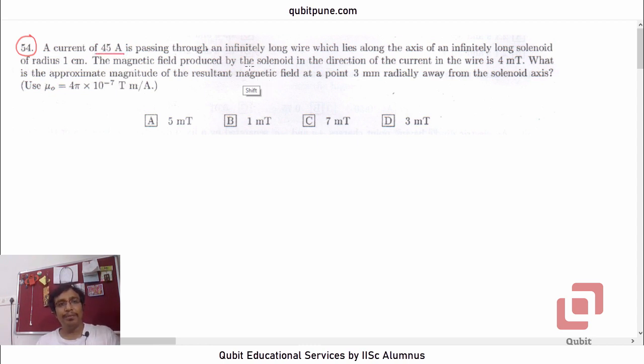A current of 45 amperes is passing through an infinitely long wire which lies along the axis of an infinitely long solenoid of radius 1 cm. The magnetic field produced by the solenoid in the direction of the current in the wire is 4 mT. What is the approximate magnitude of the resultant magnetic field at a point 3 mm radially away from the solenoid axis?